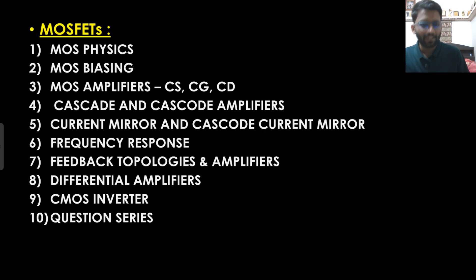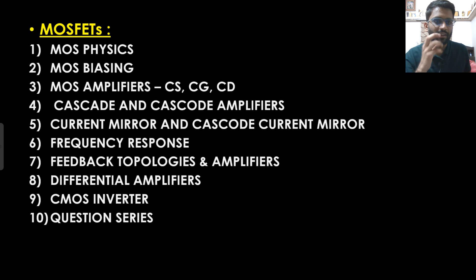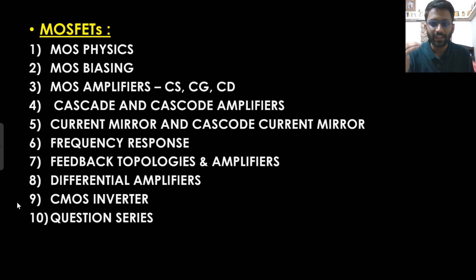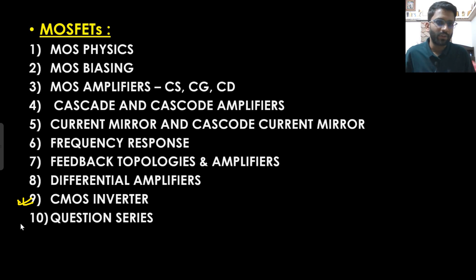After diode circuits, we are going to cover MOSFET — a four-terminal device — before BJT. We will study MOSFET, then biasing, then move to amplifiers: common gate, common source, common drain, cascode, cascade, current mirror, frequency response, feedback topology, differential amplifiers, and everything. CMOS inverter is not in the GATE syllabus but it can certainly be asked, so we will cover it very in-depth on YouTube.